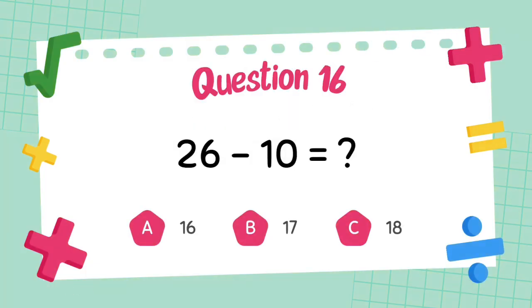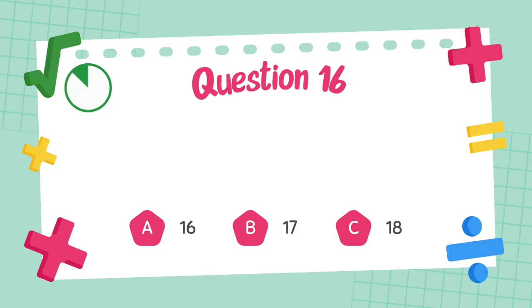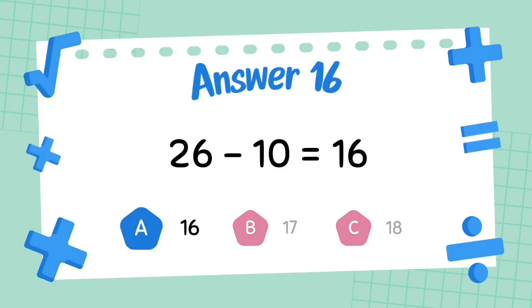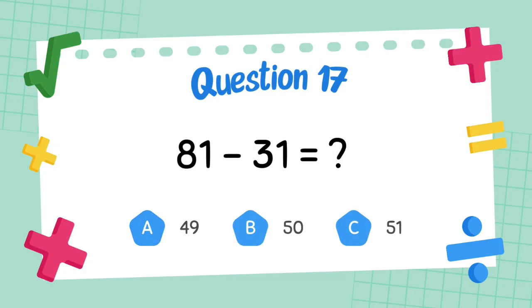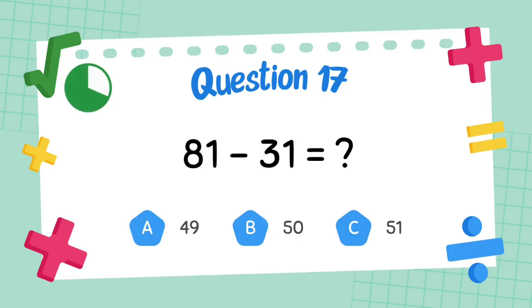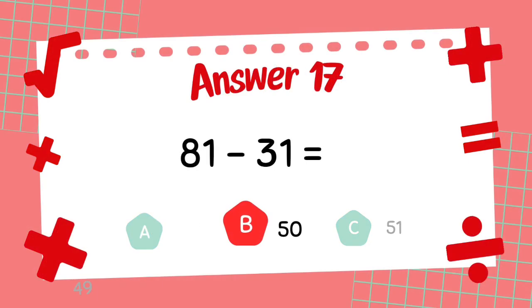What is 26 minus 10? The answer is 16. What is 81 minus 31? The answer is 50.